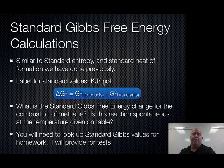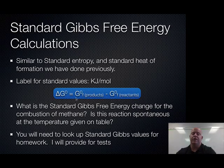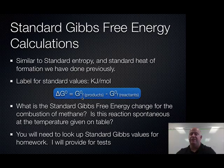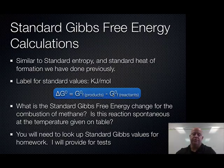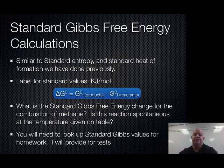The last part of this spontaneity topic is that we can calculate Gibbs free energy using standardized formation values. The equation is ΔG° = sum of Gibbs free energy of formation for products minus sum for reactants. You can pull these values off a table and solve for the answer directly.